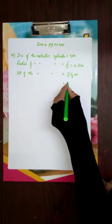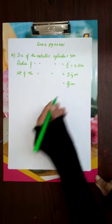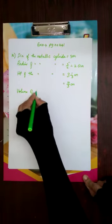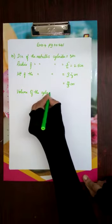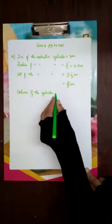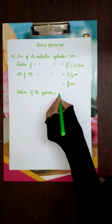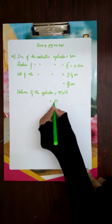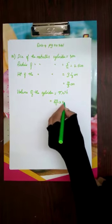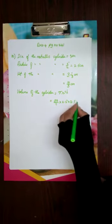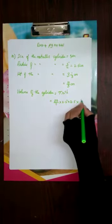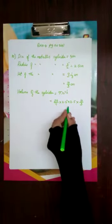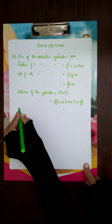We have to find the volume of the cylinder, because if we find the volume of the cylinder we will also know the volume of the sphere. The formula to find volume of the cylinder is π r² h. Substituting in the formula: 22/7 × r is 2.5, so r² is 2.5 × 2.5, and h is 10/3. Nothing cancels out, so I am not finding the answer yet — I am going to equate it with the volume of the sphere.